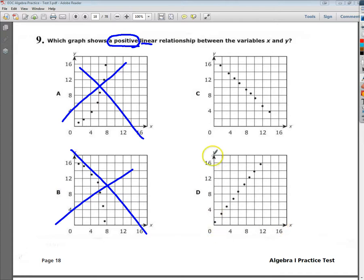These numbers are getting bigger. These numbers are getting bigger. The answer is D. C would be a good example of a negative linear relationship, whereas A and B are nonlinear relationships, both positive and negative.